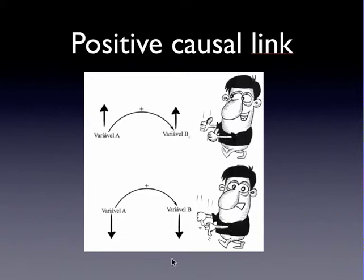If one goes down, the other goes down as well. We represent a positive causal link by an arrow and the signal plus.